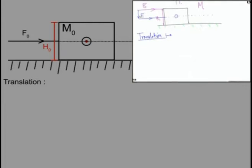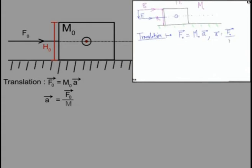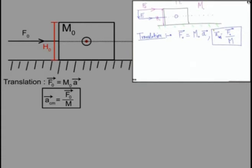I will show the proof of this. This acceleration F equals MA gives you the acceleration of the center of mass and not any other point, because in a rigid body with rotational motion, the acceleration of every point will be different. Now I want to go back to the original state and study only the rotational motion. Will this block rotate?